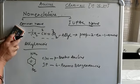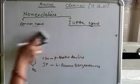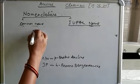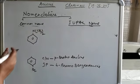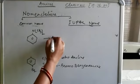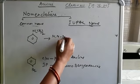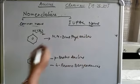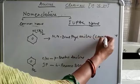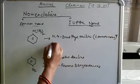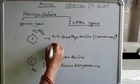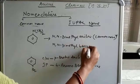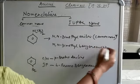Another example: suppose we have a compound with a benzene ring, NH2, and two methyl groups on nitrogen. This is a third-degree amine. The common name is N,N-dimethylaniline. The IUPAC name is N,N-dimethylbenzenamine.